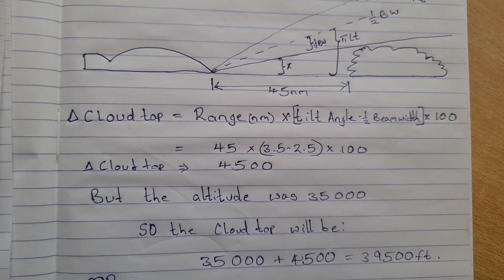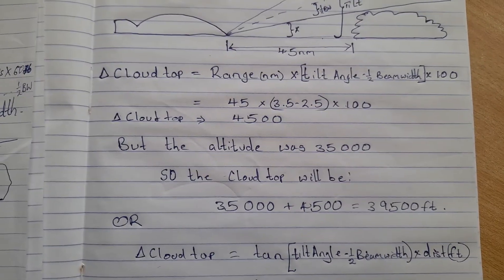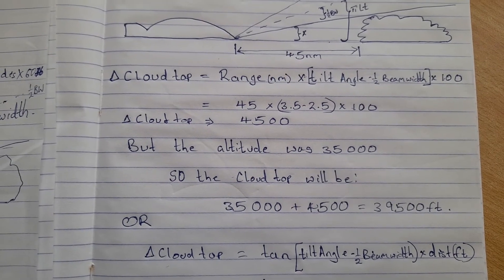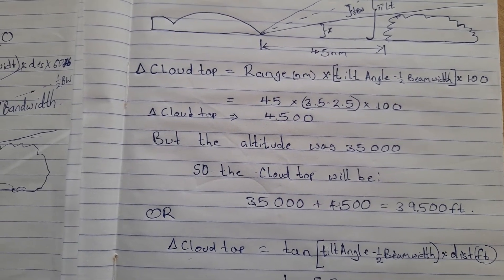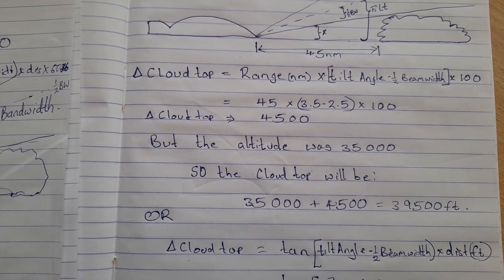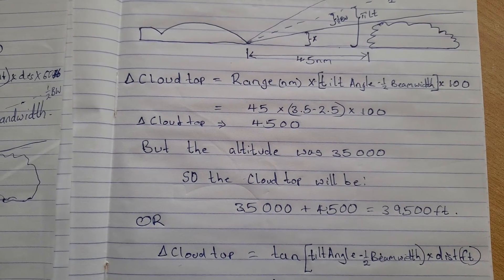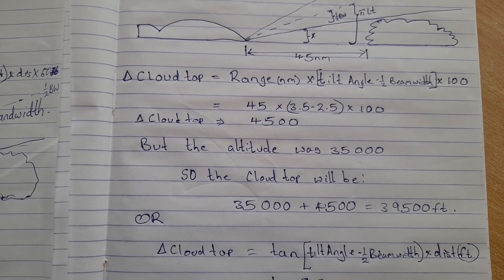The alternative formula: change in cloud top is given as the tan, which is a trigonometric ratio, tan of the tilt angle minus the beam width, times the distance in feet. The tilt angle was 3.5 and half beam width was 2.5.